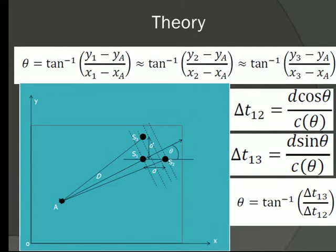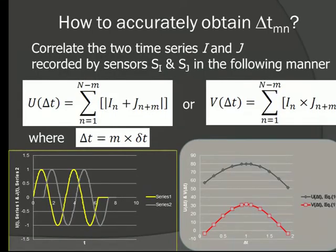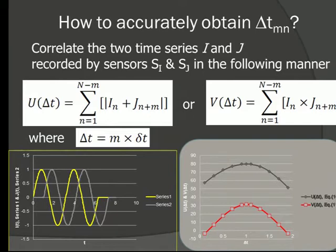The important thing is to obtain ΔT₁₂ and ΔT₁₃ very accurately, which can be done by cross-correlation — simply adding two transient signals with some time increment. When the time shift matches, the signals go into phase and you have the maximum value at that time shift.